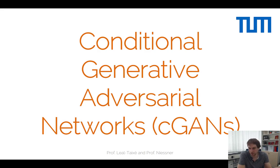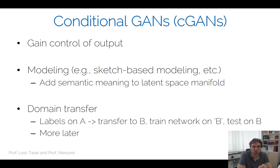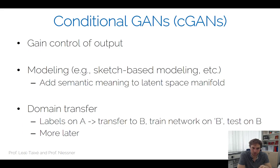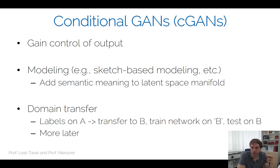Rather than generating random images from z, we want some control over the output. Real-world applications include sketch-to-image synthesis, adding semantic meaning to the manifold, generating faces with specific attributes — a smile, a certain appearance, lighting — or domain transfer between paired image sets. Without these conditioning mechanisms, GANs are not very useful for practical purposes.